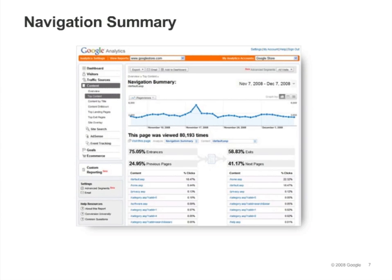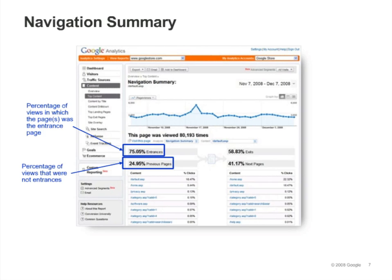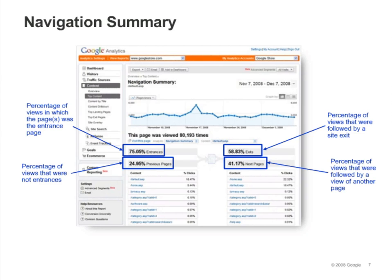Here's the Navigation Summary report. Percent Entrances shows how frequently the page was a landing page. Percent Previous Pages shows how frequently visitors came to the page after viewing another page on the site. Percent Exits shows how frequently visits ended on this page. Percent Next Pages shows how frequently visitors continued on to another page on this site. The list of pages viewed immediately before the page is shown in the left column, and the list of pages viewed immediately after is shown in the right column.